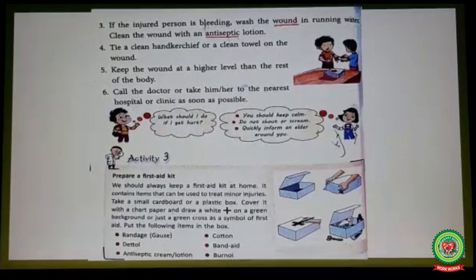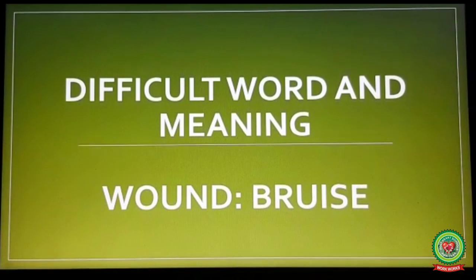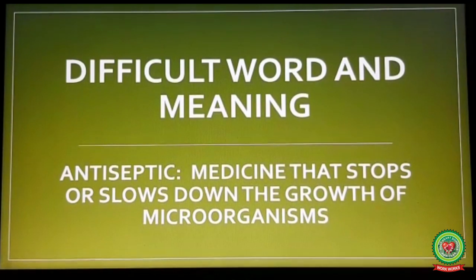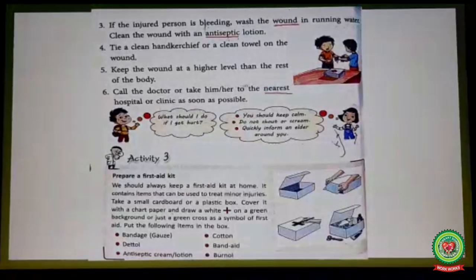Point number three: if the injured person is bleeding, wash the wound in running water. Underline the word 'wound' and write its meaning: 'bruise'. You should wash the wound with water to remove all the dirt and bacteria from the wound. Clean the wound with an antiseptic lotion. Underline the word 'antiseptic' and write its meaning: 'medicine that stops or slows down the growth of microorganisms'. Antiseptic lotion protects the patient from any harmful microorganisms.